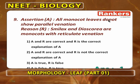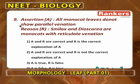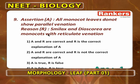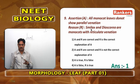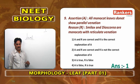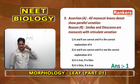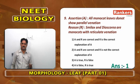Assertion: All monocot leaves do not show parallel venation. Reason: Smilax and Dioscorea are monocots with reticulate venation. Since Smilax and Dioscorea are monocots with reticulate venation, the assertion is true, and R is the correct explanation of A. So both A and R are correct, and R is the correct explanation of A.